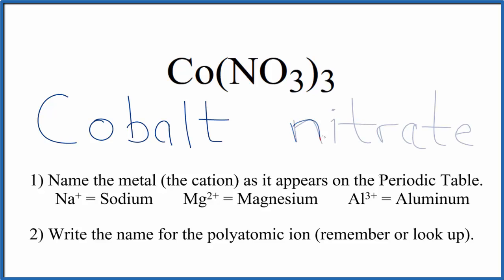So far we have the name cobalt nitrate for Co(NO3)3, but cobalt is a transition metal, so we need to write the charge between the names. We know that the nitrate ion is one minus, and we have three of them.